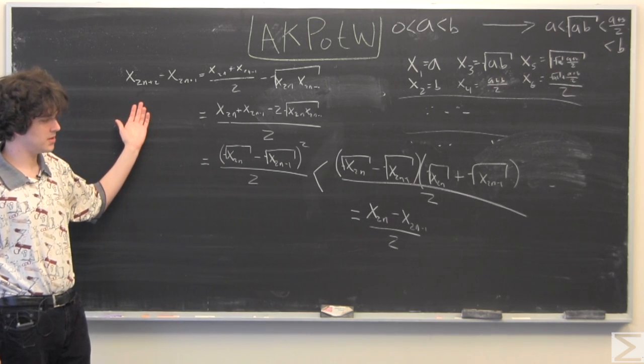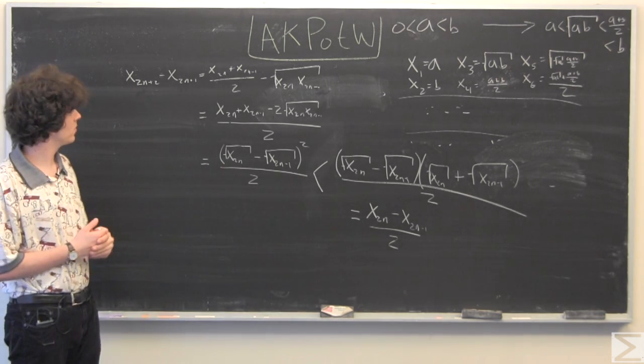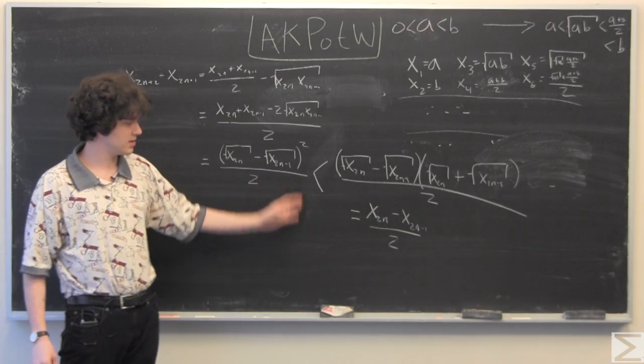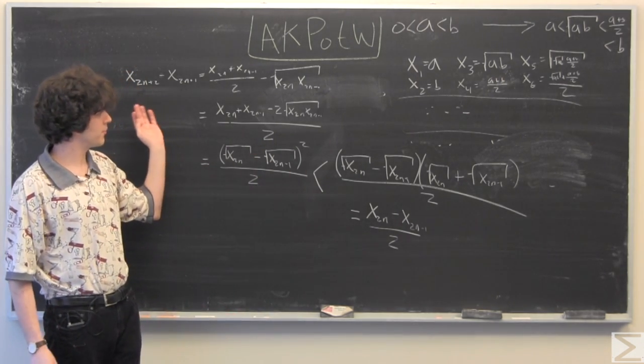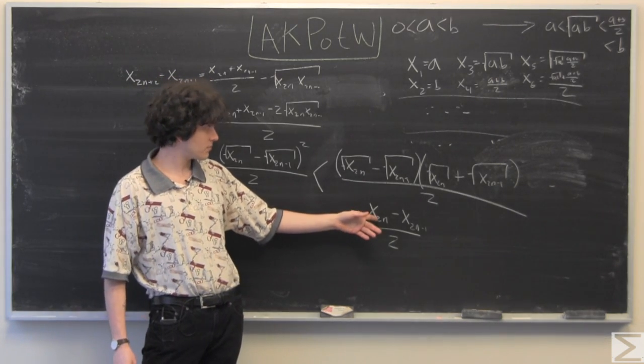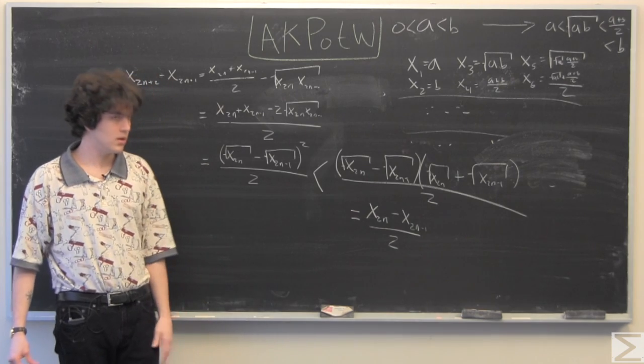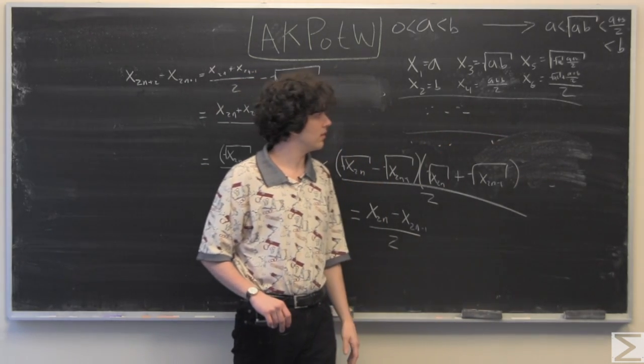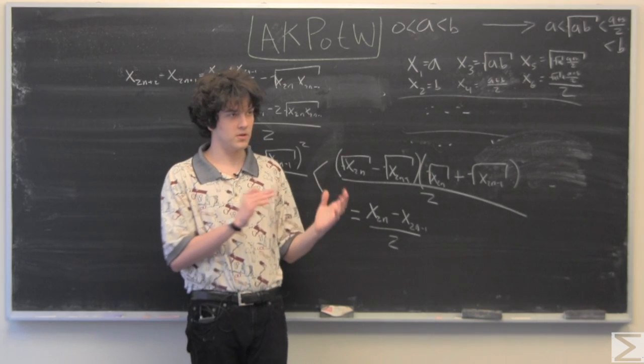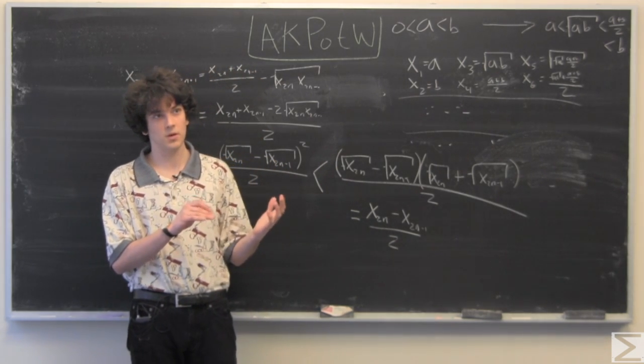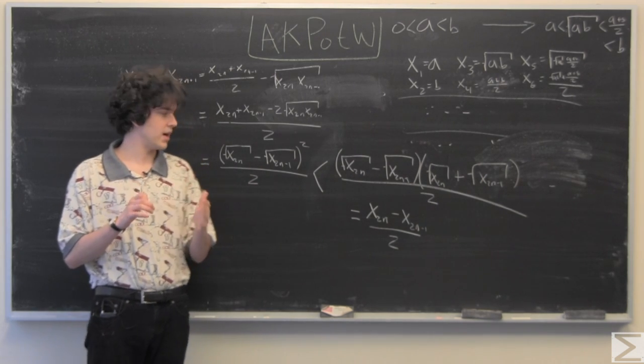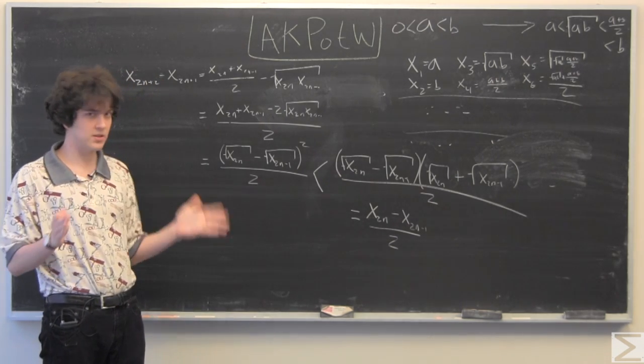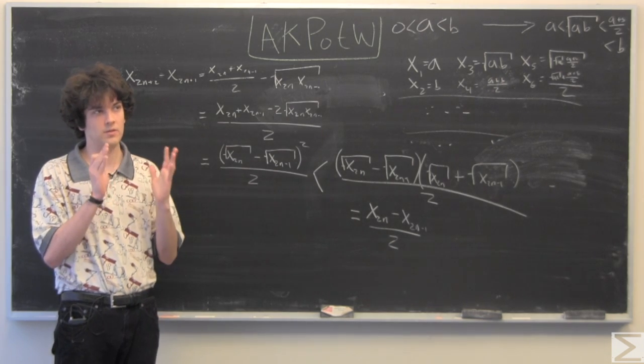And what this tells us is that we have this even odd couplet. So we'll take n equals 1 to be an example. When n equals 1, we have x sub 4 minus x sub 3. And then since we have this less than sign in the middle of all this, we know that x sub 4 minus x sub 3 is less than x sub 2 minus x sub 1 over 2. So we're saying that however far down we go in our sequence, whatever couplet we choose, the one before that divided by 2 will be greater than that couplet that we chose.